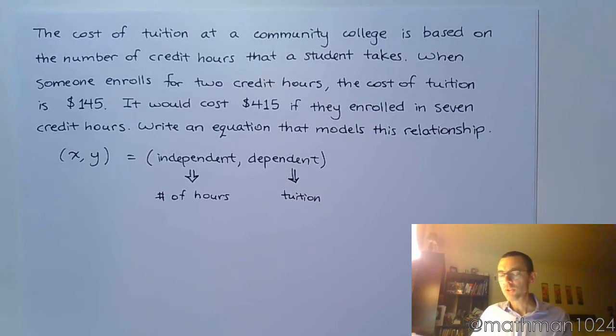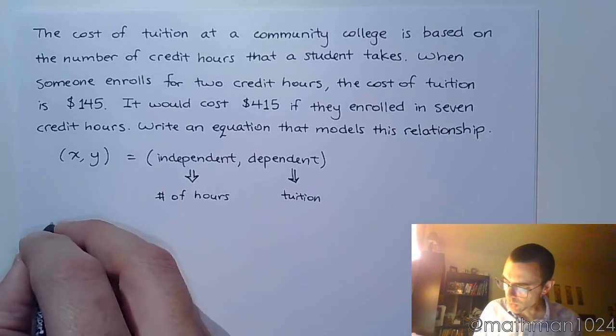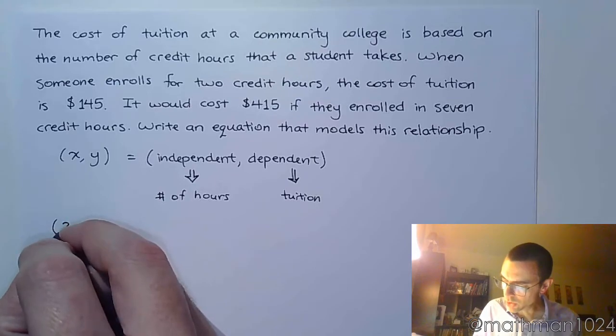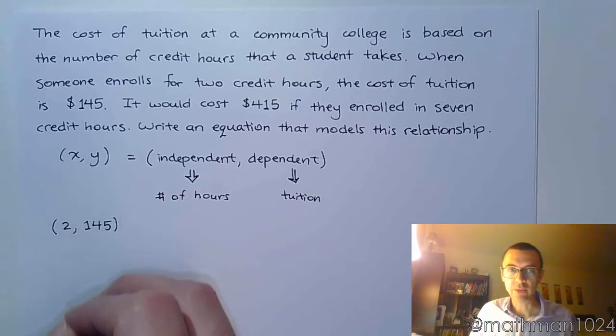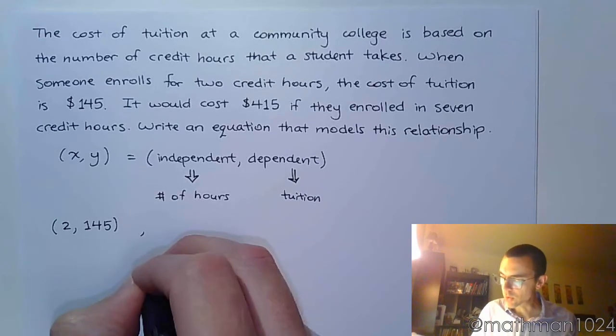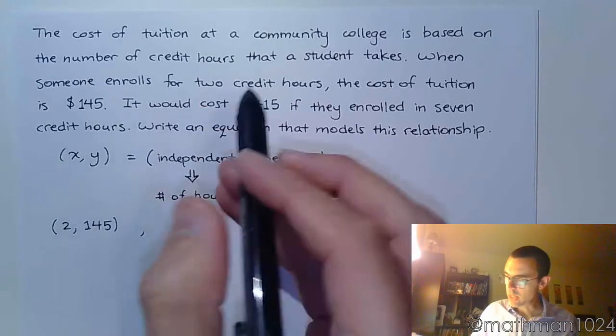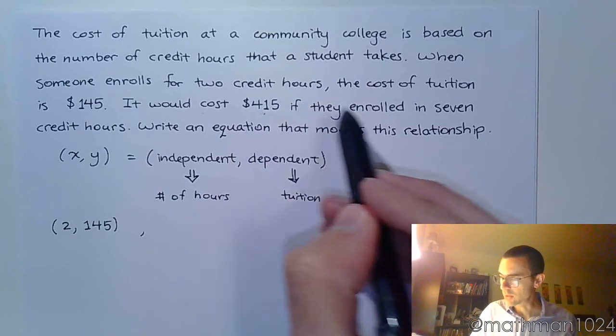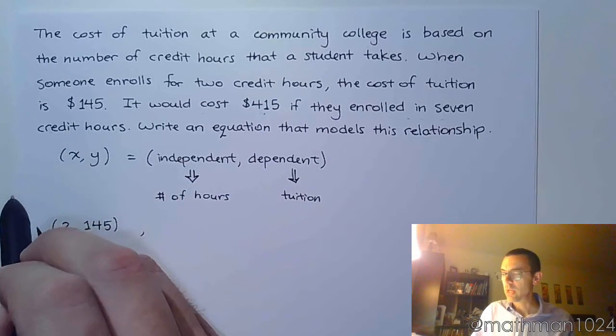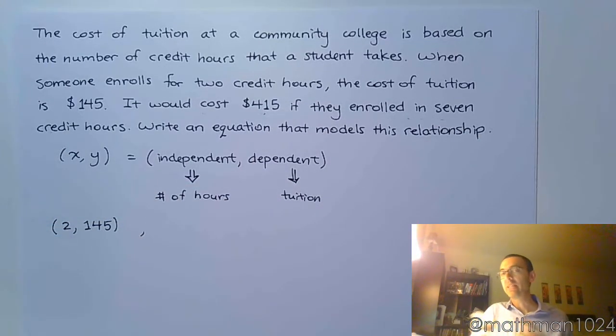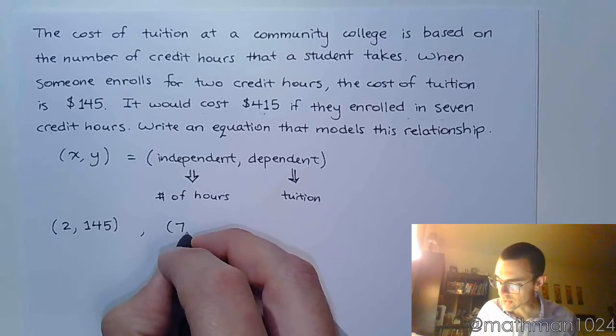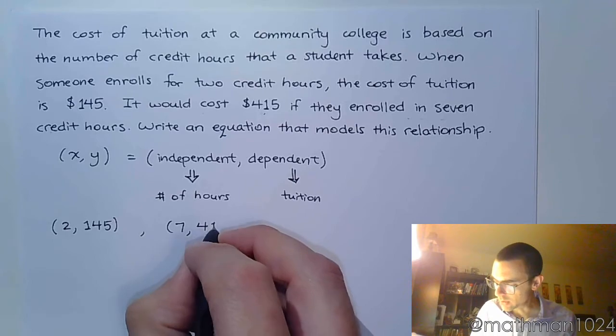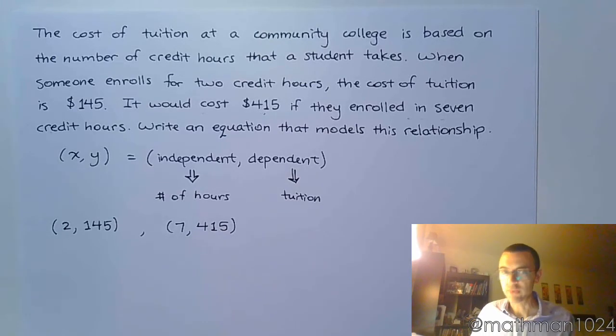All right, so keeping that in mind, let's see if we can write our two ordered pairs. So one ordered pair says that when you take two credit hours, the cost is $145. And then there's another ordered pair, which is right here. It's $415 for seven credit hours. So even though it says $415 and then $7, we understand that we've got to go with the hours first. So that's $7, and then that's $415, like that.